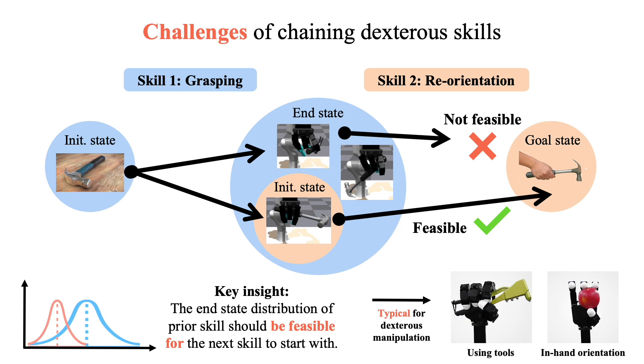This finding is typical in dexterous manipulation, which contains tool manipulation and in-hand reorientation. How the object is held in hand in the first place will directly affect the strategy of the following skills.